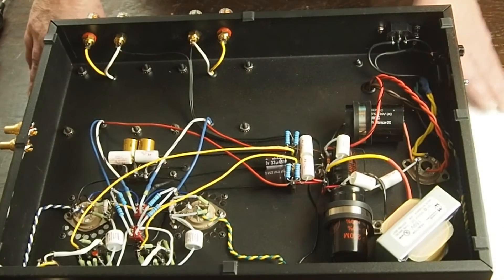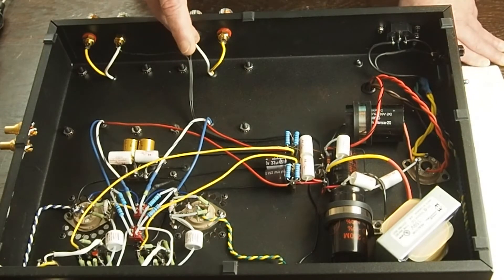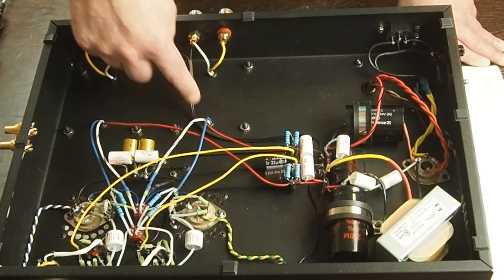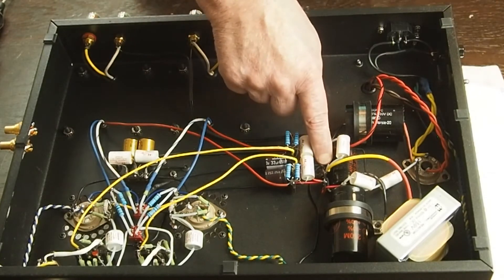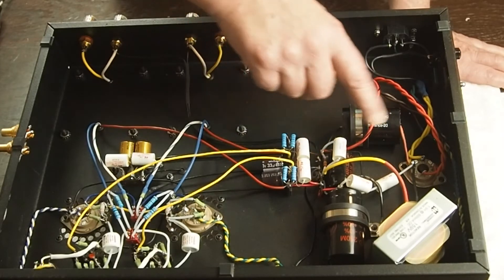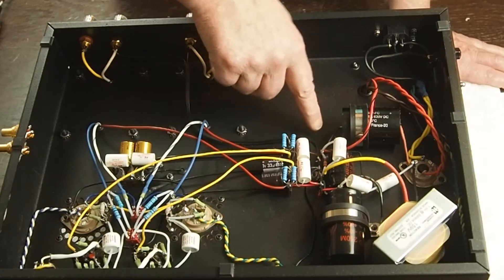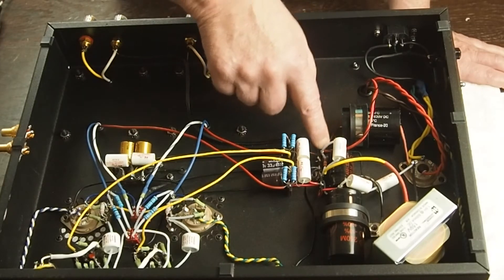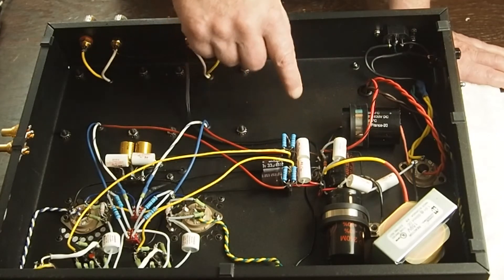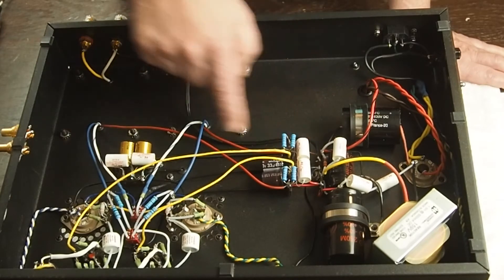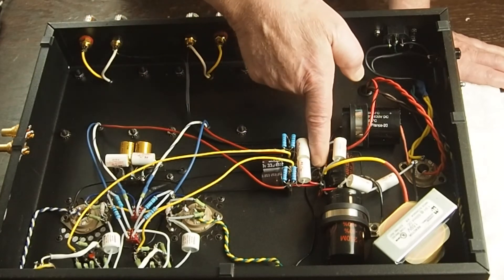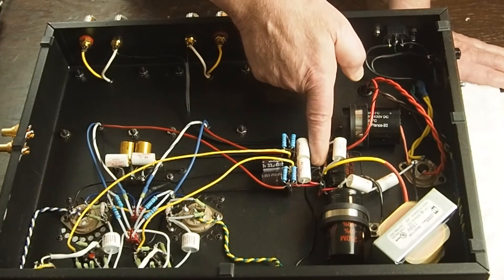From this side, you can see the output transformer leads to the jacks are real short. These are the ground leads that come over to my star ground. These three tabs right here are my star ground. It's where the center tap for the transformer is connected. It's where the ground lead from this first capacitor is connected. And it's also where the grounds for these cathode resistors and everything goes is over here to this one point. That's very important to not end up with ground loops.